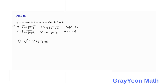Since a plus b equals 4, we have 4 squared equal to 2m, because a squared plus b squared equals 2m, plus 2ab. Simplifying, we have 16 minus 2m is equal to 2ab.